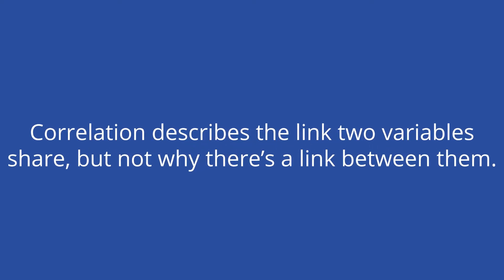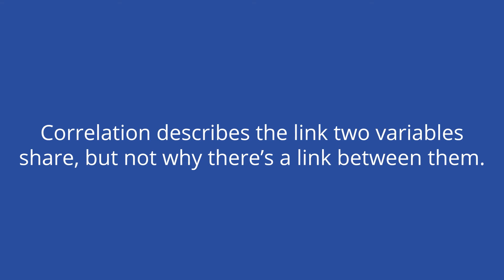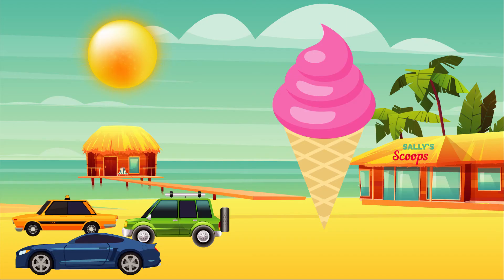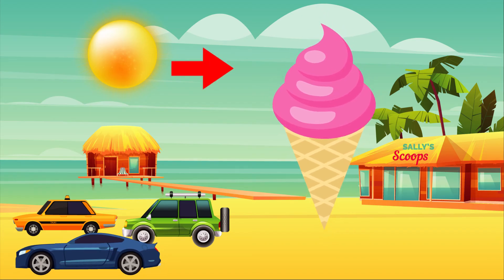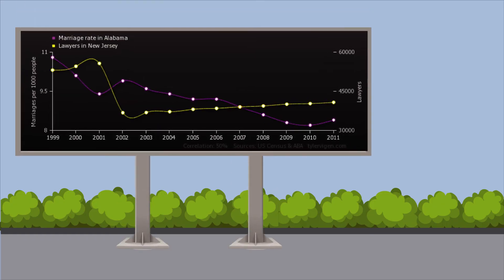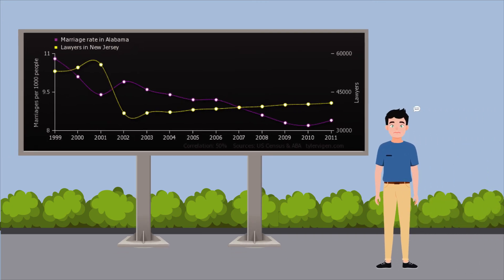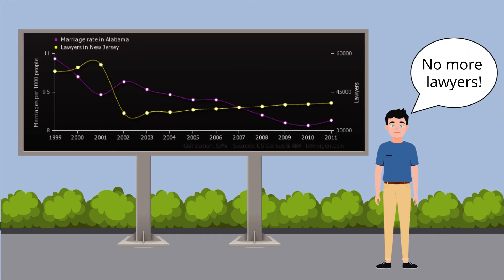Correlation is extremely helpful for making predictions since it describes a link between two variables, but correlation doesn't explain why there's a link in the first place. If two variables show a correlation, one variable may influence the other, or it may not. It could be that a third, unaccounted-for variable is influencing both of them — like how the weather caused a spike in both ice cream profits and car thefts in the opening example. It could also be that two variables share no deeper relationship than correlation, since random data can and does sometimes strongly correlate.